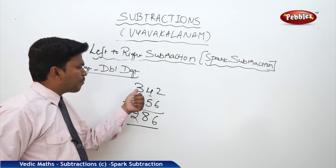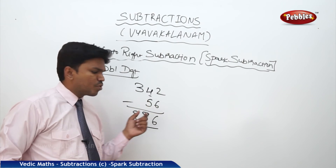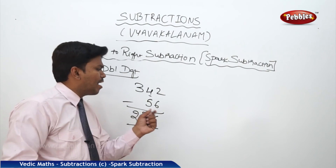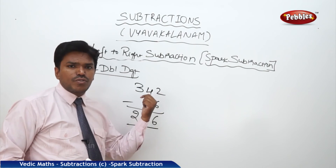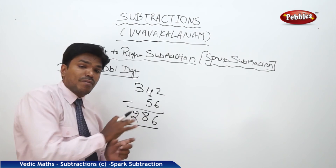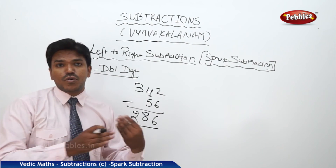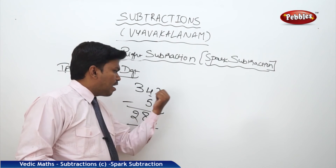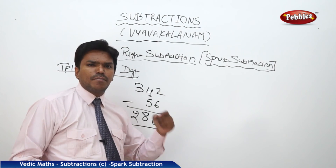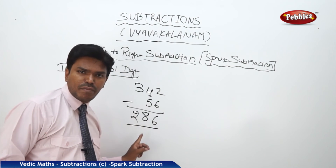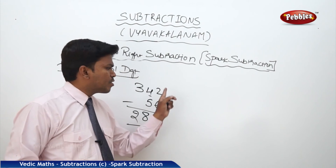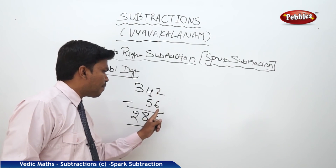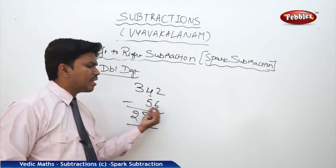Let me repeat: drop 3 as it is, but before dropping check — next numbers are mismatched, so 3 becomes 2. For 4 and 5 mismatched, bring 4 and add complement of 5 (which is 5): 4 plus 5 equals 9. Before writing 9, check again — next numbers are mismatched, so 9 becomes 8. For 2 and 6 mismatched, bring 2 and add complement of 6 (which is 4): 2 plus 4 equals 6. From now on, I will not write the complements separately — we should know them mentally.